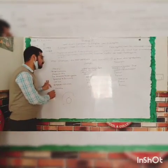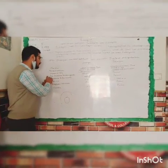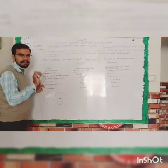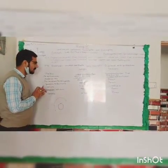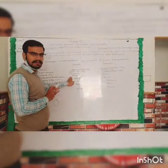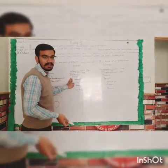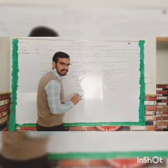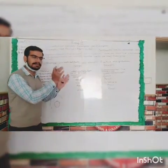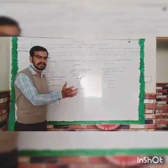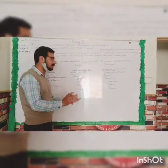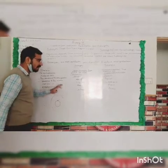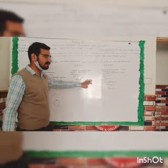Now we consider membrane-bound organelles. In prokaryotic cells, membrane-bound organelles go into the cell wall. There are some organelles present in eukaryotic cells that are not found in prokaryotic cells — many are absent in prokaryotes but present in eukaryotes.